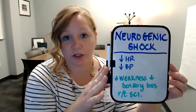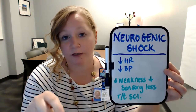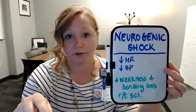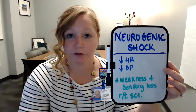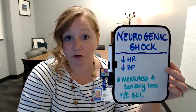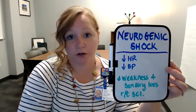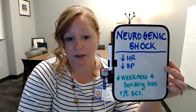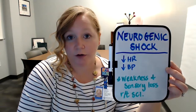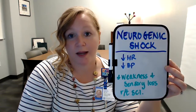Now with neurogenic shock, you're still probably going to have weakness and sensory loss, but that's more related to the actual injury itself, not because of the disruption of the central nervous system like spinal shock. It's very difficult sometimes to determine if the patient is in spinal shock or neurogenic shock, but the main difference is with spinal shock you're going to have more flaccid paralysis and loss of reflexes. So different than other shocks: spinal shock and neurogenic shock both present with low blood pressure and low heart rate.